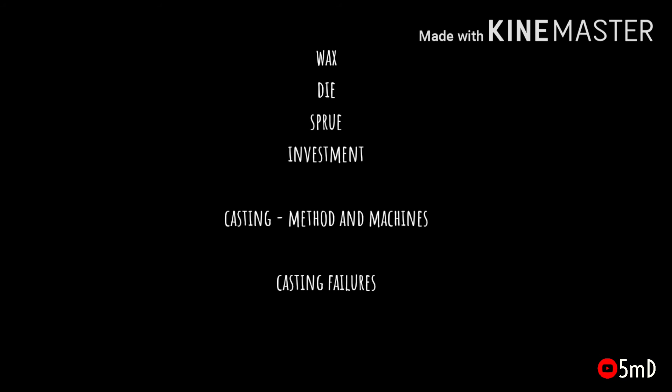First we could deal with the types of waxes, then we could go on to what is a die and what are the types of dies used, what are the types of casting rings, casting methods, casting procedures along with the casting machines. In between we could see about investment material as well as sprue wax and where to place the sprue. At the end we could see about casting failures — what all the wrong things could happen in a casting procedure. So that's all about this video series which we will follow in the upcoming weeks.